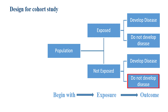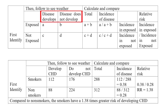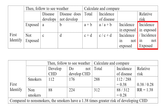Similarly, in the non-exposed group, some participants develop disease and some don't. First, identify the exposed and unexposed population and follow to see whether the disease develops or not. Calculate and compare incidence of disease in exposed and unexposed groups. The relative risk is calculated by the formula: incidence of disease in exposed group divided by incidence of disease in unexposed group.